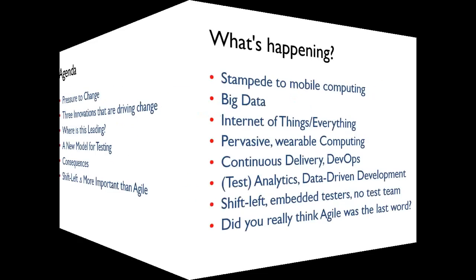So what's happening out there? Change is always there — our industry has always been in this state. Some illustrations: there's the notion of mobile computing, a stampede towards putting everything into mobile devices. Big data seems to have emerged in the last year or two. The Internet of Things is a really fascinating area. And the Internet of Everything — it's staggering what is likely to be the case in the next five or ten years.